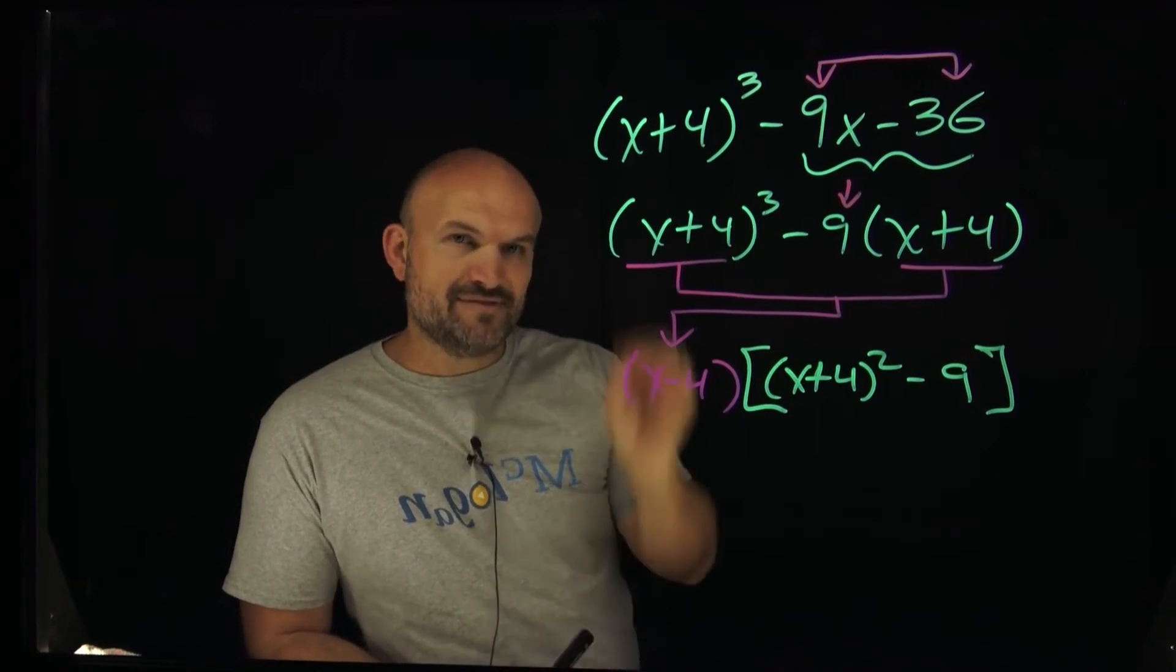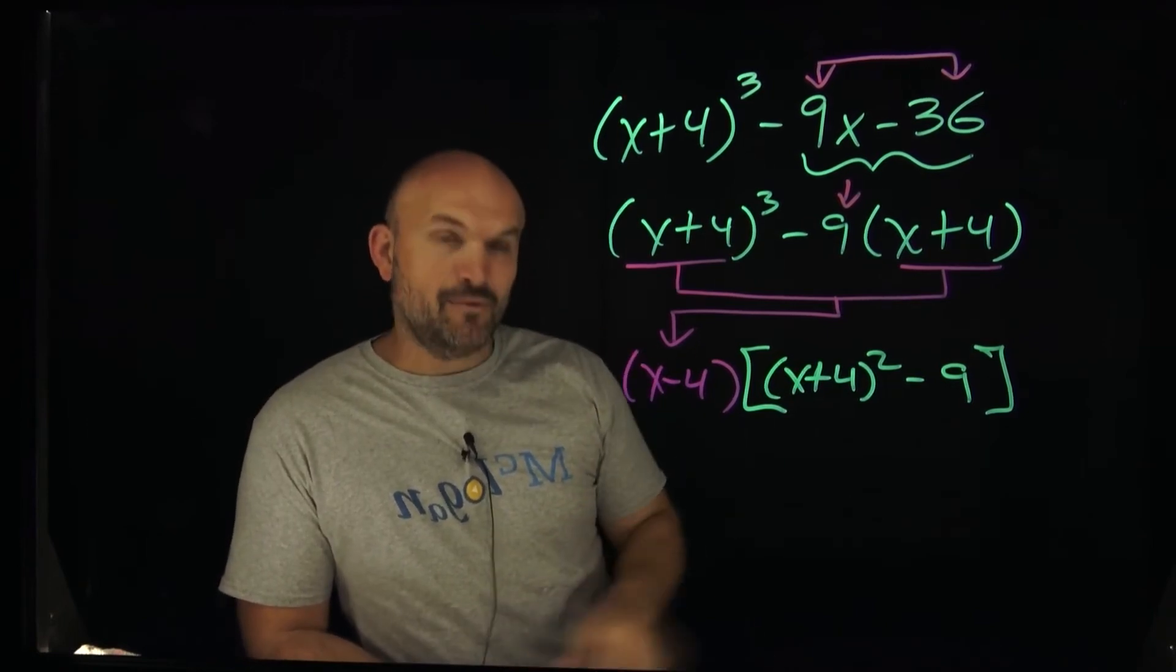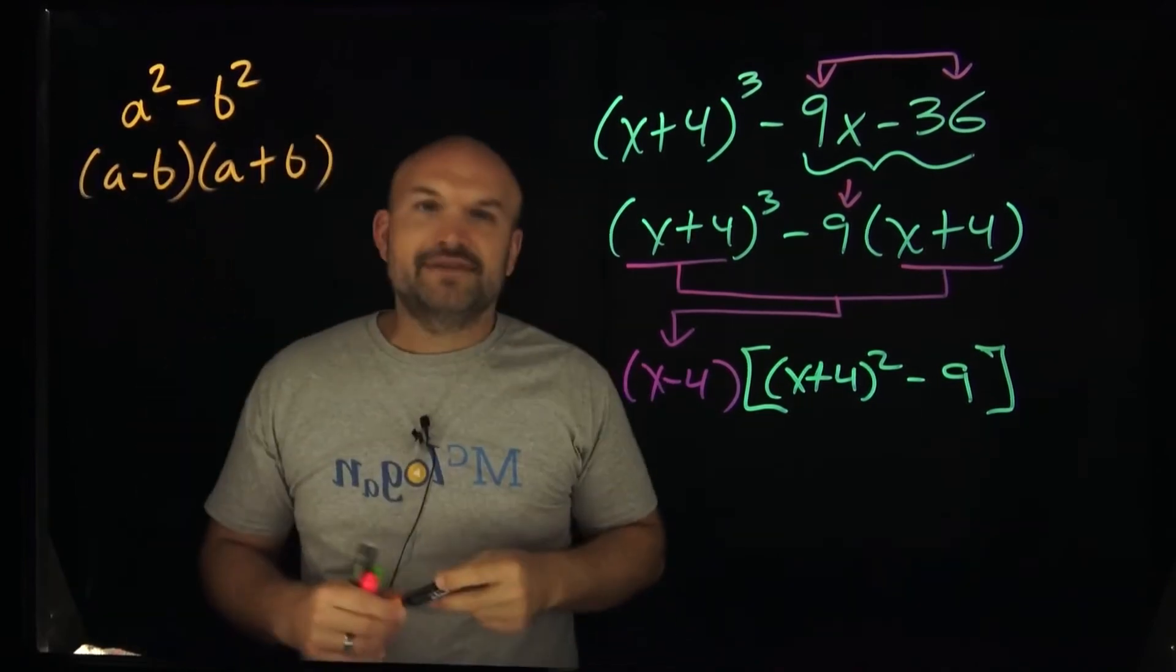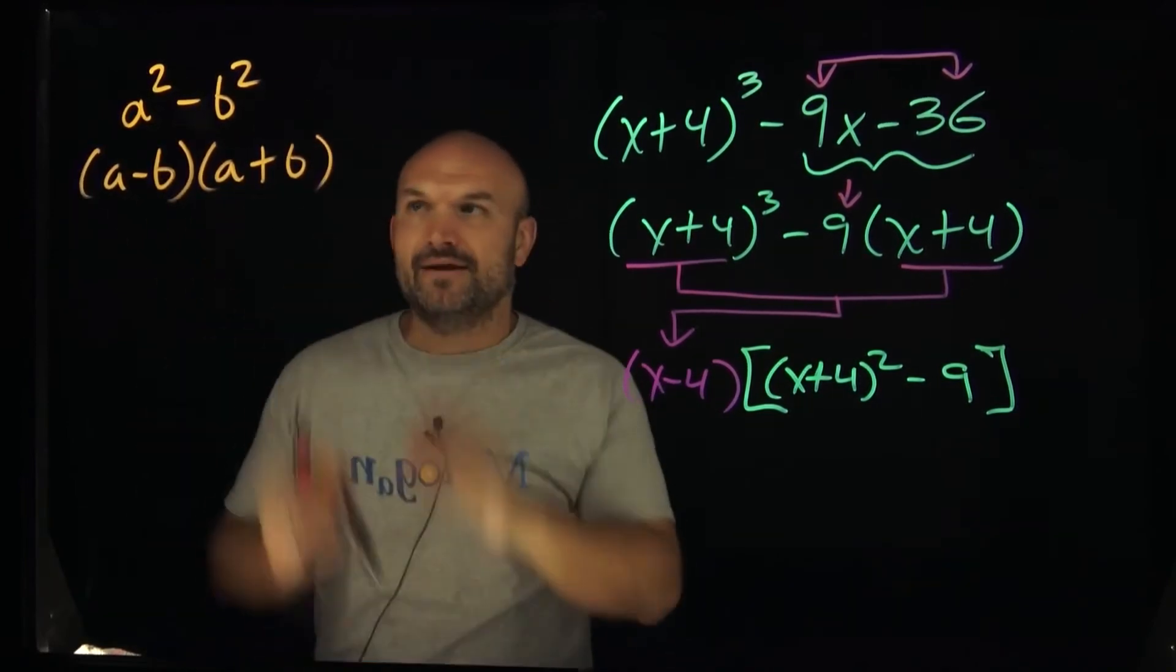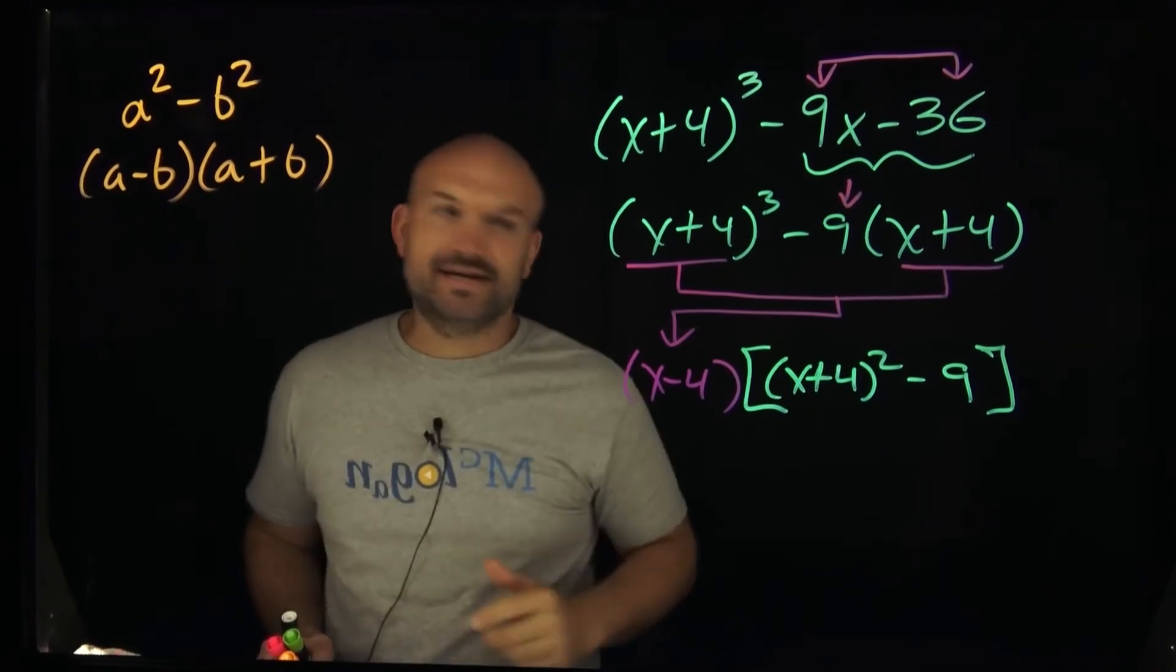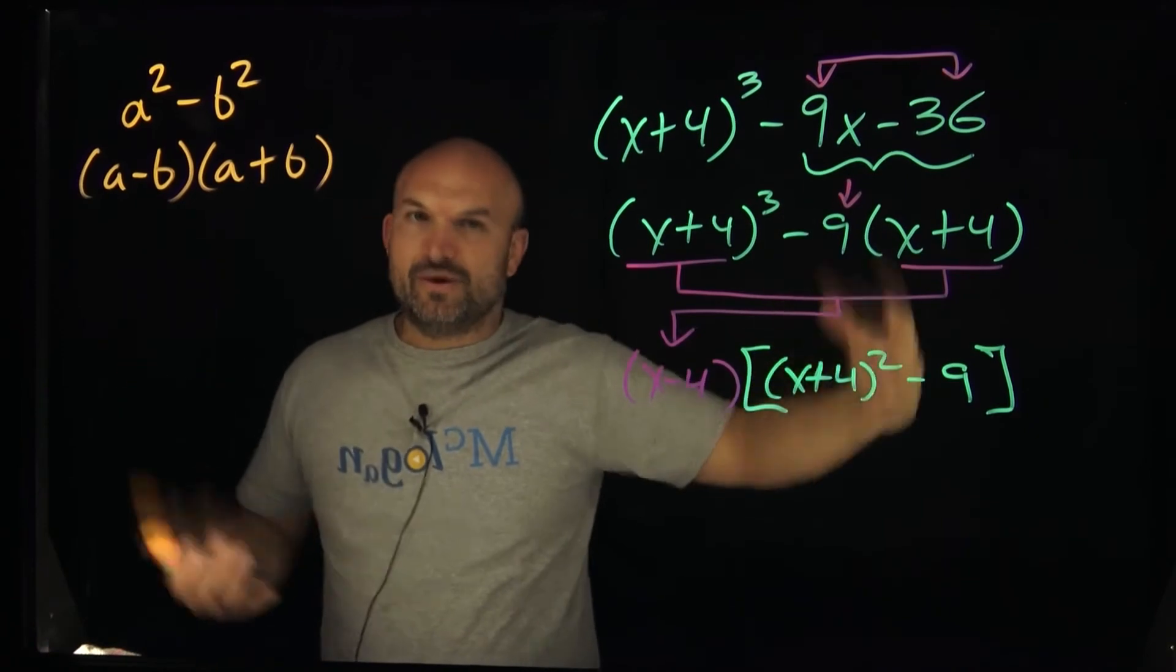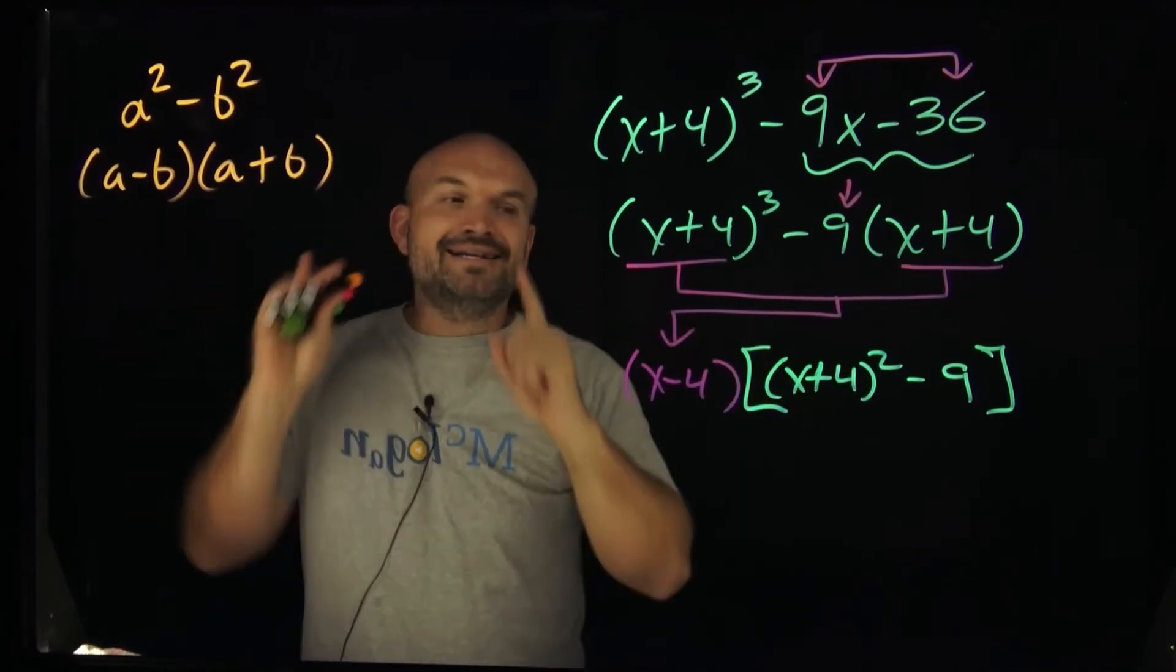And hopefully you recognize whenever you have something squared minus something else squared, I want you to think difference of two squares. Anything in factoring, we got to know that. We have to make sure this is ingrained in us. So I recognize nine to be a square number. And I see this x plus four squared. So that's why I said square minus square, difference of two squares.